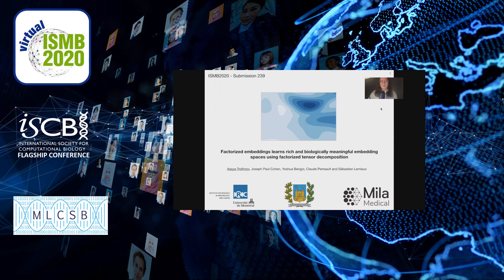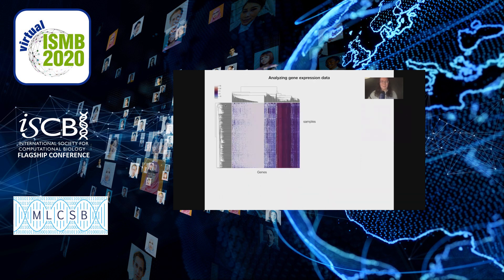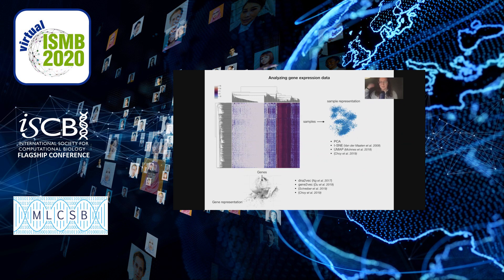My work is on RNA sequencing, and gene expression data usually looks like a matrix with a certain number of samples and a certain number of genes and gene expression values. Usually people attempt to get a sample representation for discovering new cell types or analyzing patient data, and this is done using dimensionality reduction algorithms like PCA, t-SNE, and recently UMAP.